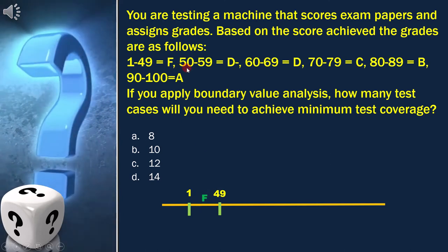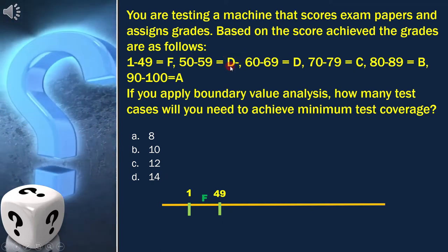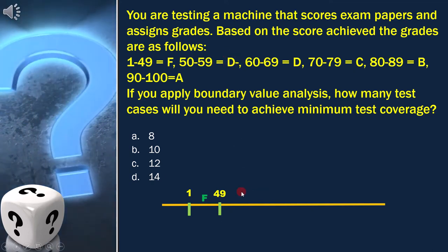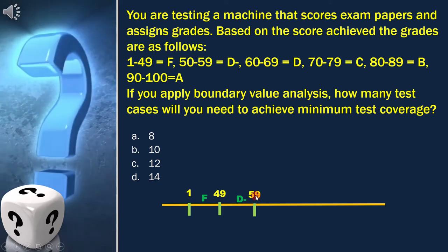Next range is from 50 to 59 and corresponding grade is D minus. From this we get the next boundary, which is 59 and D minus is the grade.